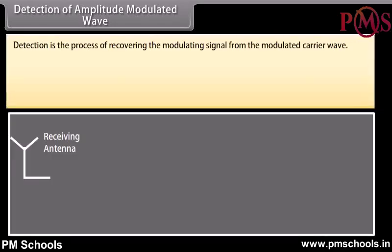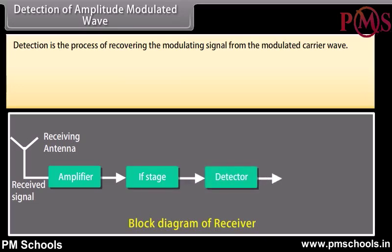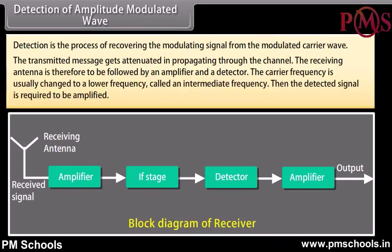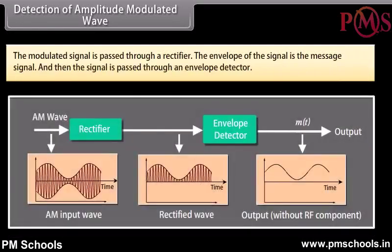Detection of amplitude modulated wave: Detection is the process of recovering the modulating signal from the modulated carrier wave. The transmitted message gets attenuated in propagating through the channel, so the receiving antenna is followed by an amplifier and a detector. The carrier frequency is usually changed to a lower intermediate frequency. The modulated signal is passed through a rectifier, and the envelope of the signal — which is the message signal — is then extracted through an envelope detector.